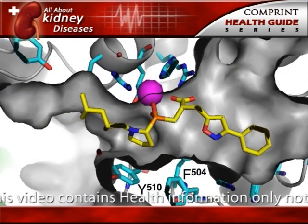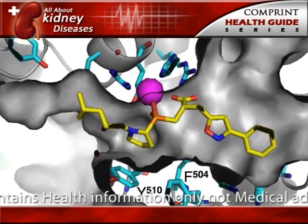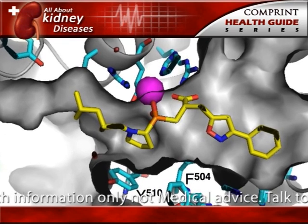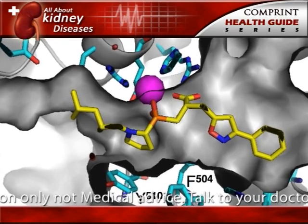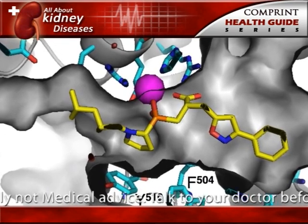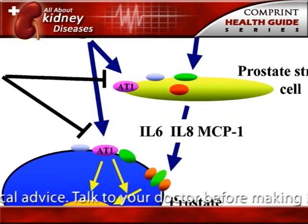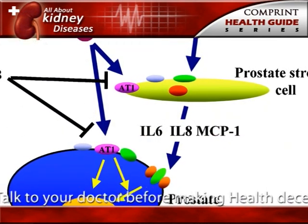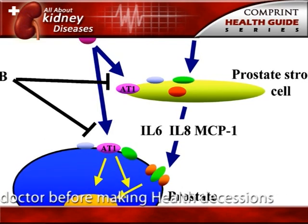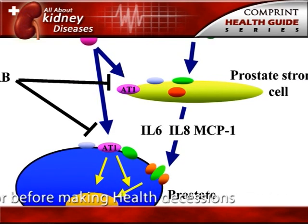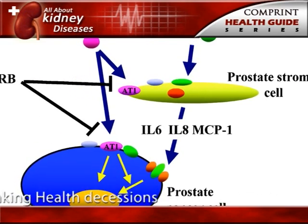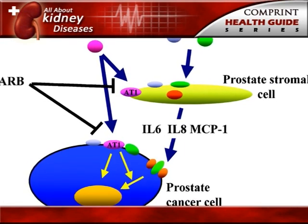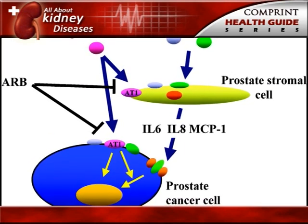Use of medications called angiotensin-converting enzyme, ACE inhibitors, or angiotensin receptor blockers, ARBs, to treat high blood pressure can also slow or delay the progression of diabetic kidney disease.